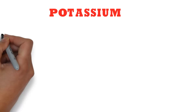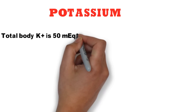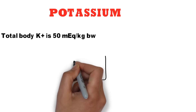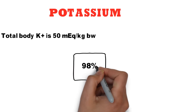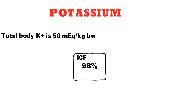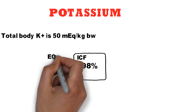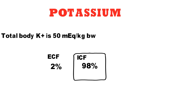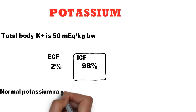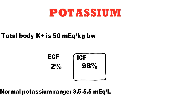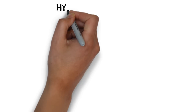As you all know, potassium is one of the most abundant cations in the body and it is critical for many cell functions. Total body potassium is around 50 mEq per kg of body weight. 98% of potassium in the body is located within the cells, where high intracellular potassium is required for many cell functions including cell growth, division and volume regulation. Only 2% of the total body potassium is located in the extracellular fluid, where its normal concentration is around 3.5 to 5.5 mEq per litre.